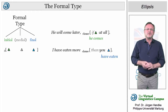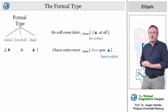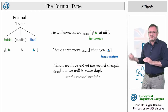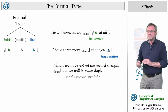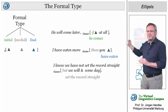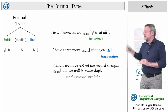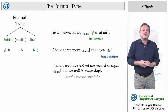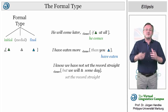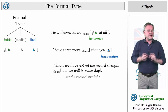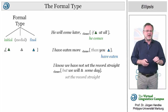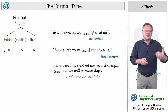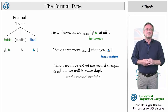In 'I know we haven't set the record straight, but we will someday,' we can argue that the adverbial 'someday' is optional and the type of ellipsis is thus final.